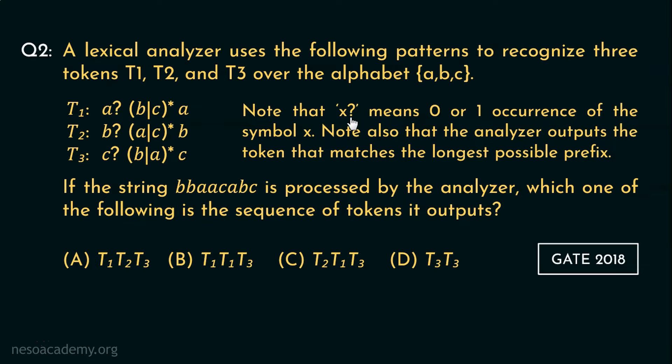Note that X followed by question mark means zero or one occurrence of the symbol X. Note also that the analyzer outputs the token that matches the longest possible prefix. Well, we will understand this part later. Now, if the string bbaacabc is processed by the analyzer, which one of the following is the sequence of the tokens it outputs? And these are the options given.